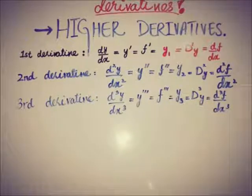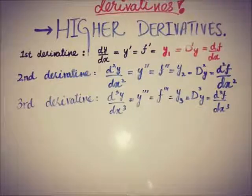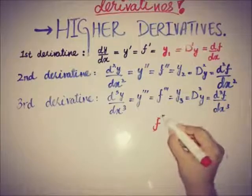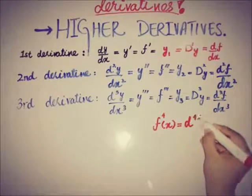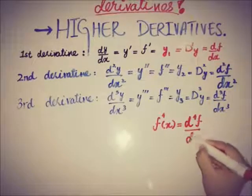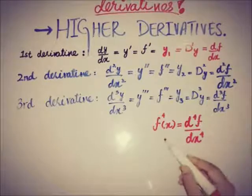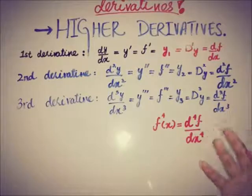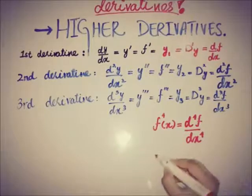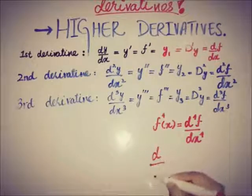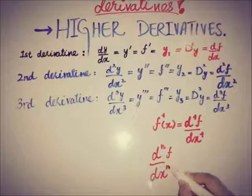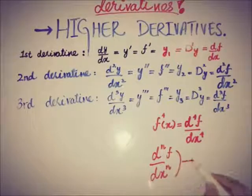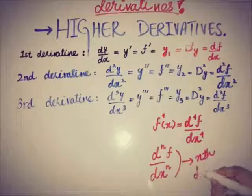The same applies to the third derivative and all higher derivatives — the least higher derivative is the second derivative. We represent the fourth derivative as f⁽⁴⁾(x), also written as d⁴f/dx⁴, and so on for the 5th, 6th, 7th derivatives. The general representation for the nth derivative is dⁿf/dxⁿ.